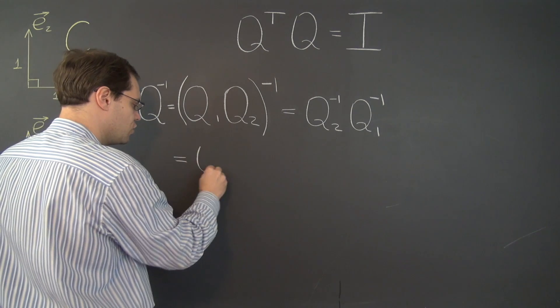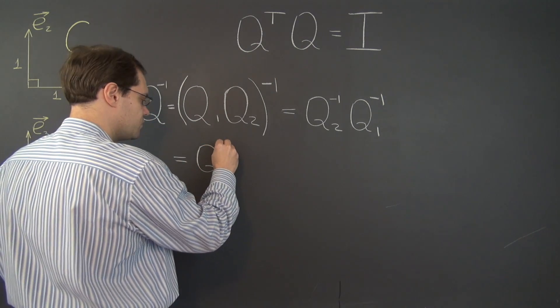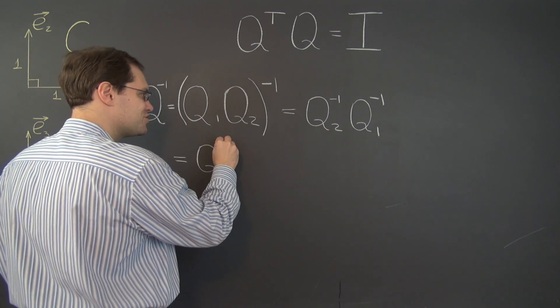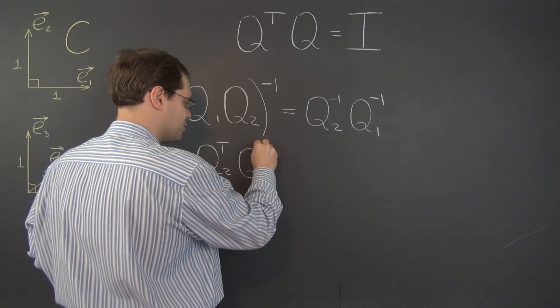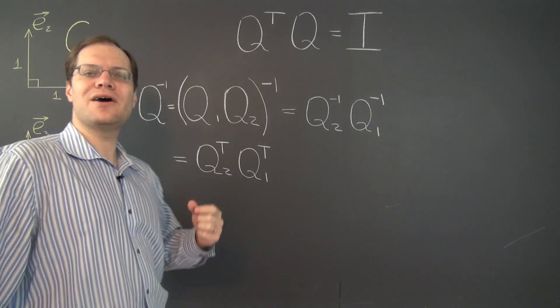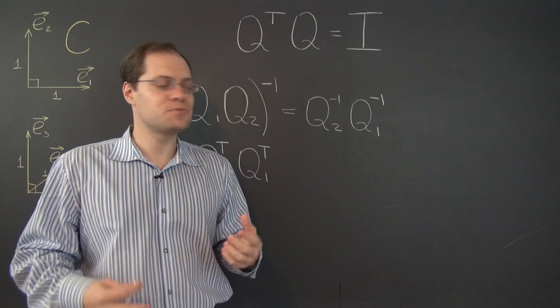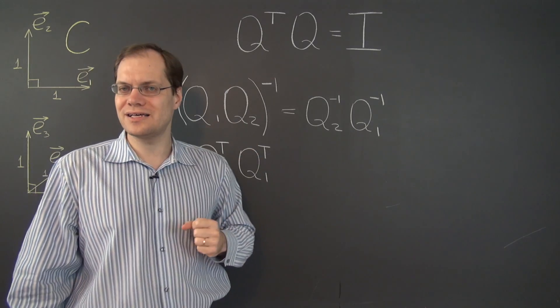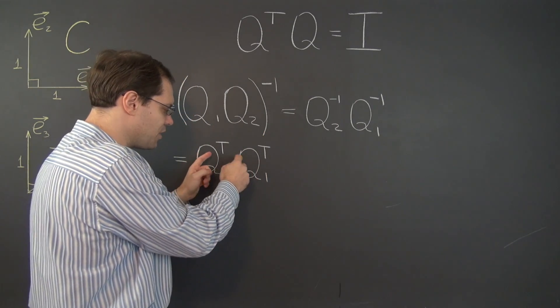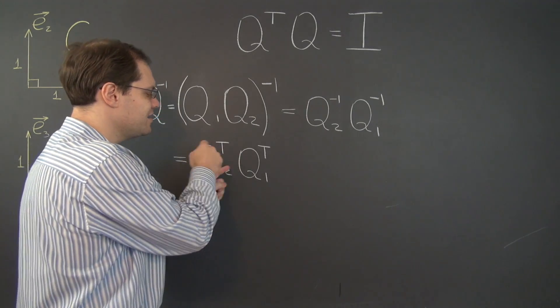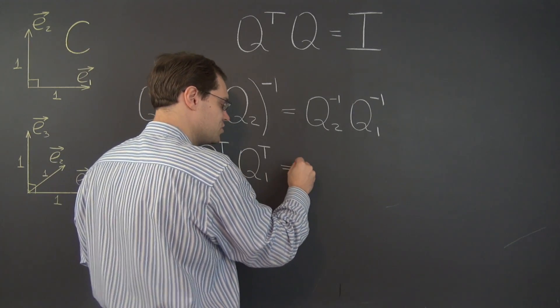So we have Q2 transpose multiplied by Q1 transpose. And now we also recall that transposes in a way work the same way as inverses. And this is the transpose of the product of these two matrices in the reverse order, so the order restores itself.